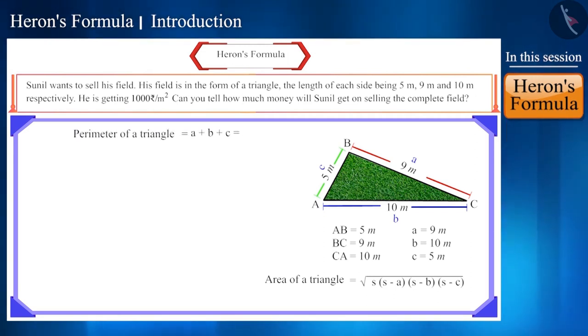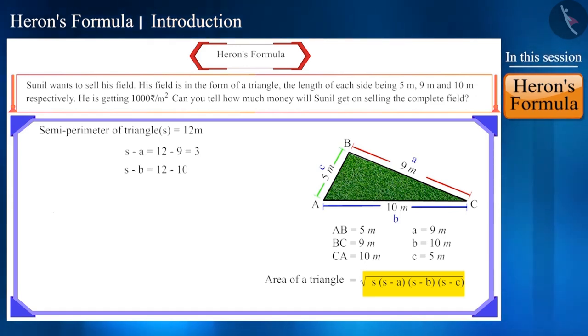The perimeter of the triangle is 24 meters and its semi-perimeter will be 24 divided by 2 which is 12 meters. Now by finding the value of the terms within brackets S minus a, S minus b and S minus c, with the help of the formula we will find the area.